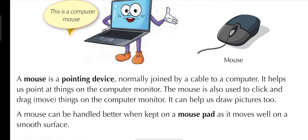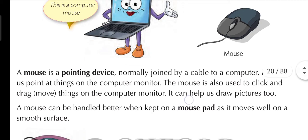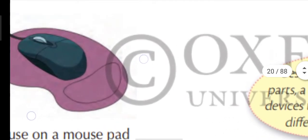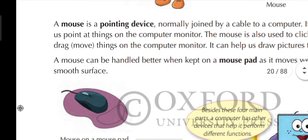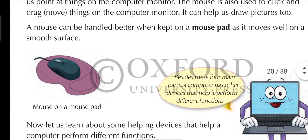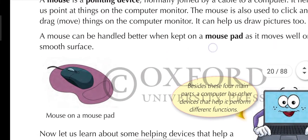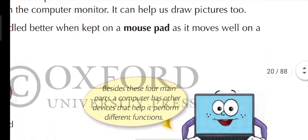A mouse can be handled better when kept on a mouse pad, as it moves well on a smooth surface. If you have a computer at home, try using the mouse without the mouse pad. The pink colored object placed below the mouse is the mouse pad. Without the mouse pad you won't be able to use the mouse as effectively. With the mouse pad you can easily move it.